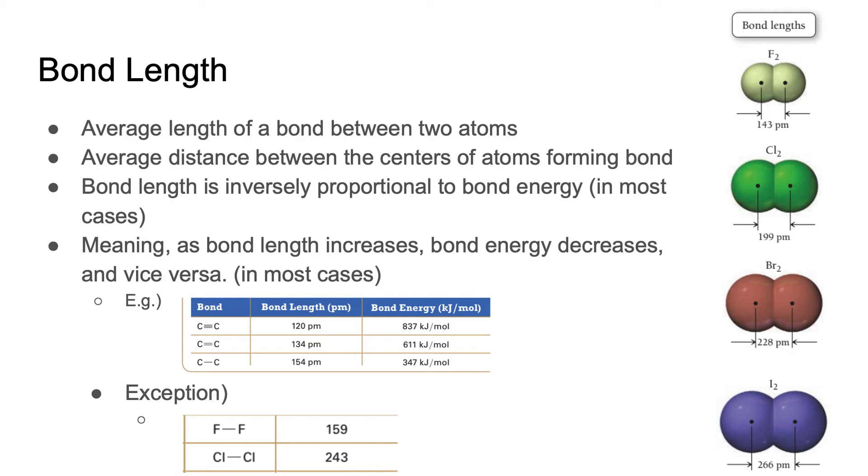However, this is not true for all cases. Each atom has their own individual atomic radius before forming bond, and this impacts the bond length as well.